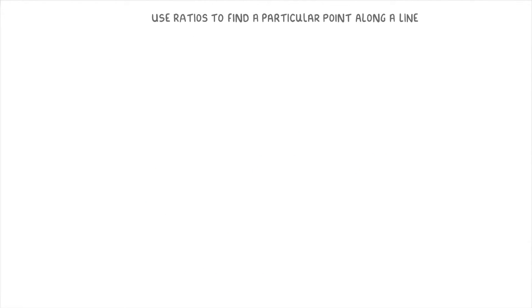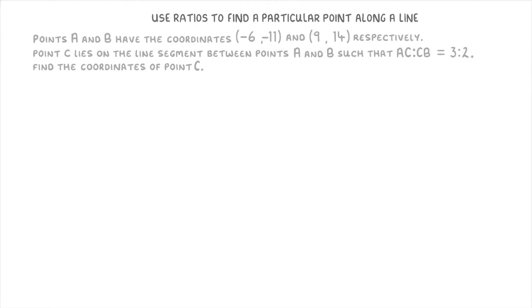Let's try an exam style question this time. So this question says that points A and B have the coordinates negative 6, negative 11, and 9, 14 respectively. Point C lies on the line segment between points A and B, such that AC to CB is 3 to 2. Find the coordinates of point C.